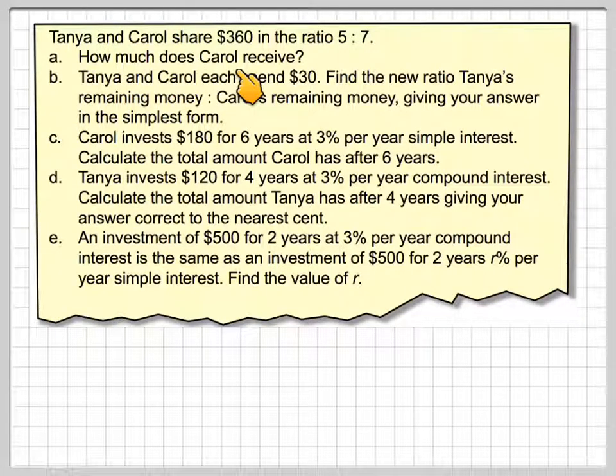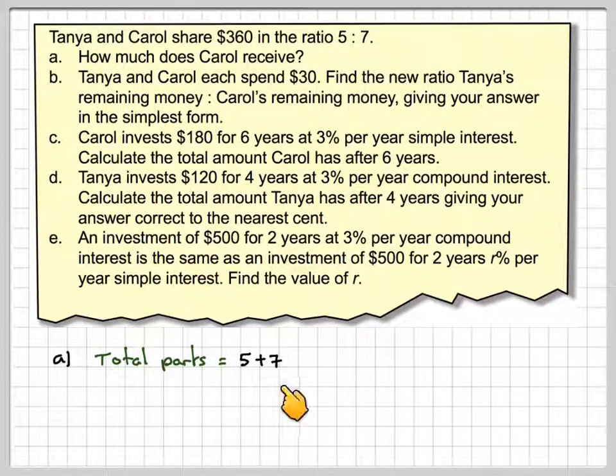Tanya and Carol share $360 in the ratio of 5 to 7. How much does Carol receive? So the total parts is going to be 5 plus 7, which is 12 parts.